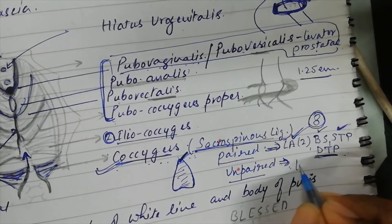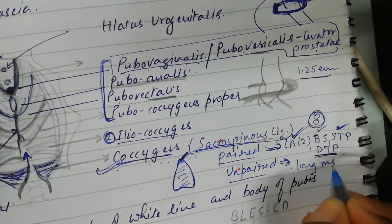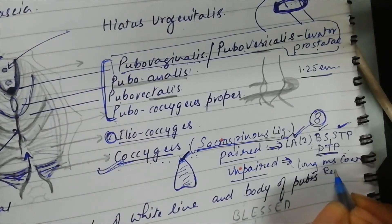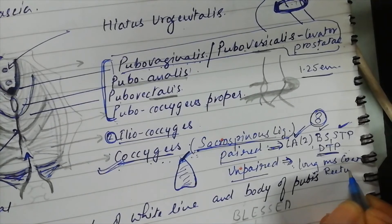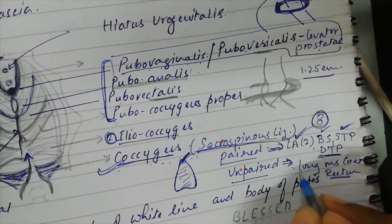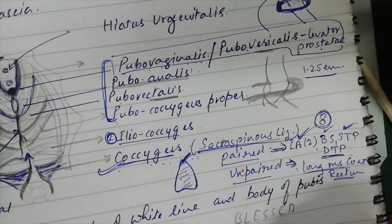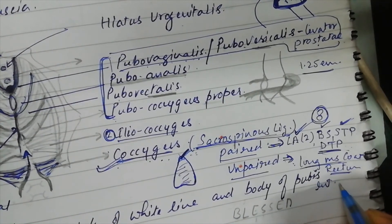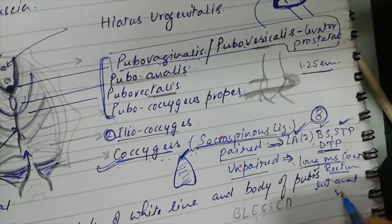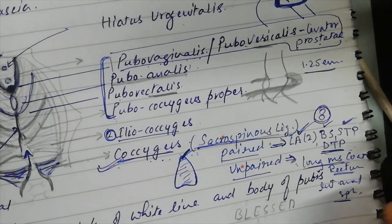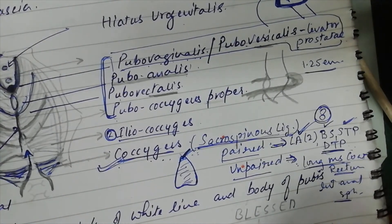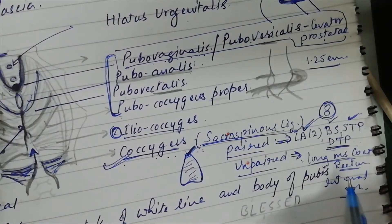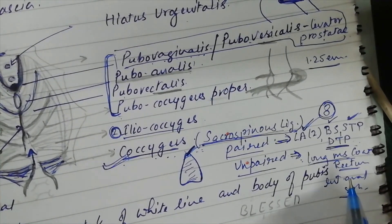Among the unpaired muscles attached here are the longitudinal muscle coat of the rectum and the internal anal sphincter. These two unpaired components together with the four paired muscles are attached to this perineal body.